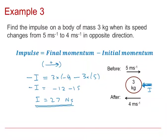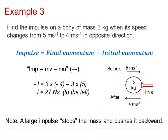A positive answer confirms the arrow on the diagram is correct — the impulse is to the left and it is 27 Newton seconds. Again we ended up adding the two values together because we needed a big impulse to stop the body moving and then push it backwards at 4 metres per second.